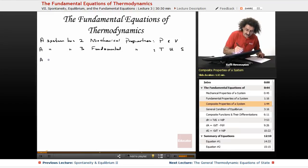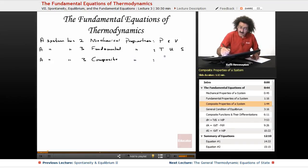Now a system has three composite properties, or compound properties if you will. They are the enthalpy, the Helmholtz energy, and the Gibbs energy.